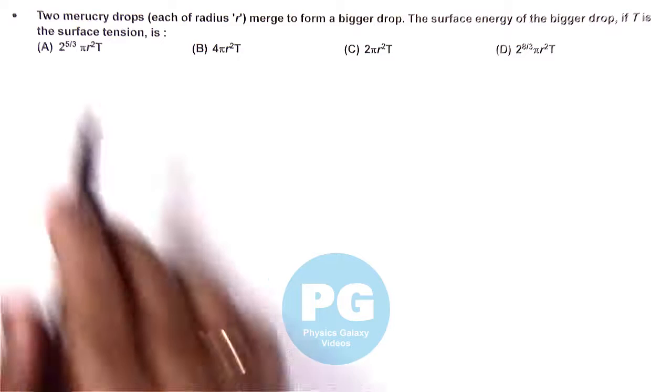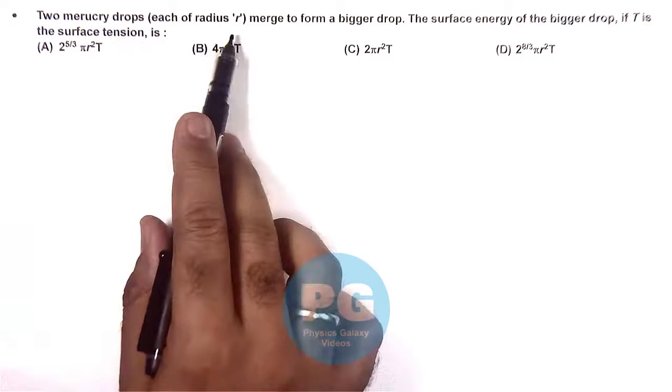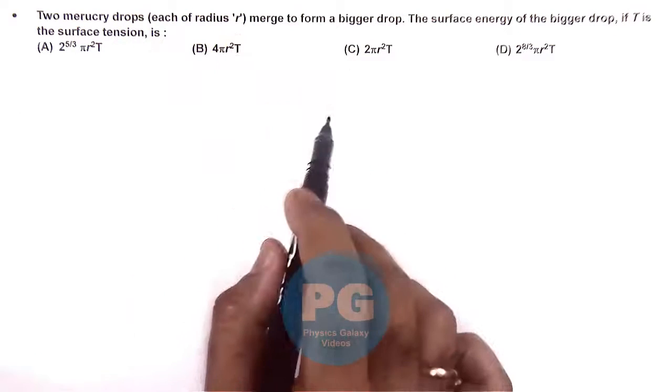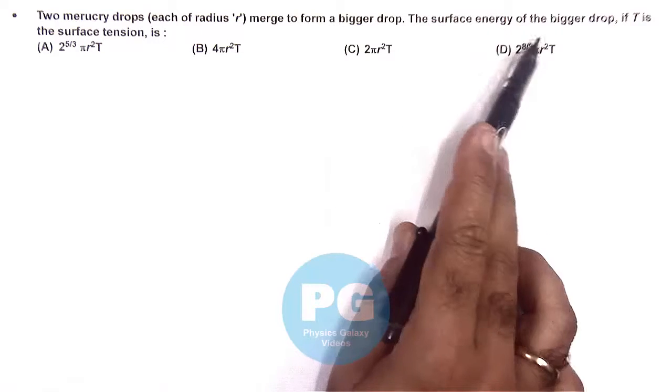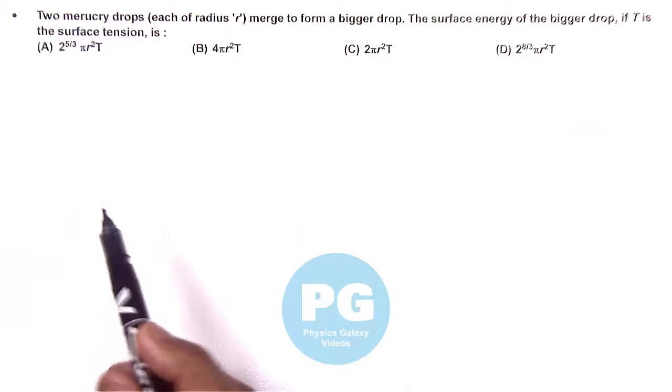In this question, we are given two mercury drops, each of radius r, merge to form a bigger drop. The surface energy of the bigger drop, if T is the surface tension, is